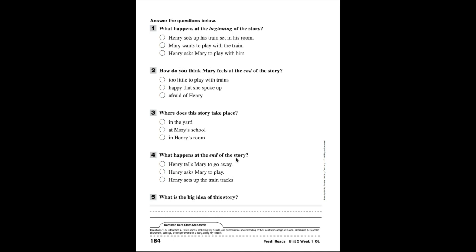Is it A: in the yard, B: at Mary's school, or C: in Henry's room? This is a type of question asking you to remember the setting of the story. Where did most of the story or the whole story take place? Every story happens somewhere—you have to remember where it happened. Number four: what happens at the end of the story? Is it A: Henry tells Mary to go away, B: Henry asks Mary to play...